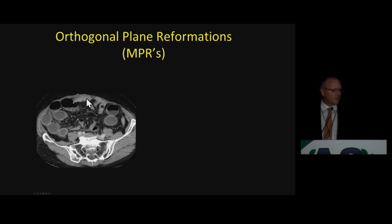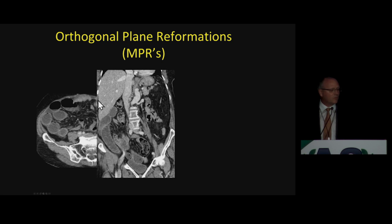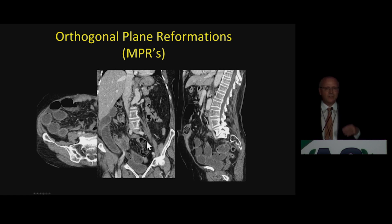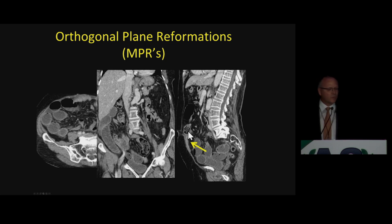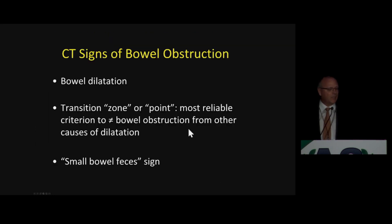For example, this case — there's dilatation of small bowel, there are some collapsed loops, so already we're thinking there is bowel obstruction. We scroll up and down and don't see the transition point. The same with the coronals — we now see the small bowel feces sign. Yes, there's obstruction, but instead of spending a lot of time in the coronals and the axials, very quickly in the sagittal view, we see exactly where the obstruction is. That's the transition point with the small bowel feces sign. So we use the three planes routinely and interchangeably to determine what is important in bowel obstruction.